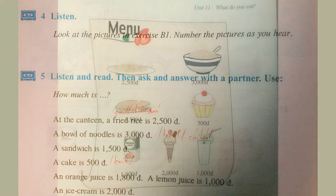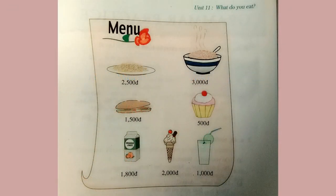Menu: two thousand five hundred dong. Three thousand dong. One thousand five hundred dong. Five hundred dong. Eighteen hundred dong. Two thousand dong. One thousand dong. Two thousand dong. Two thousand dong.